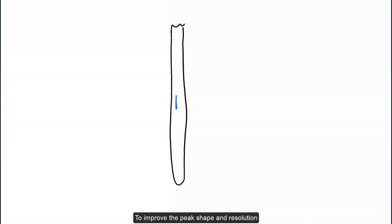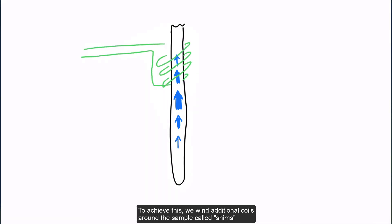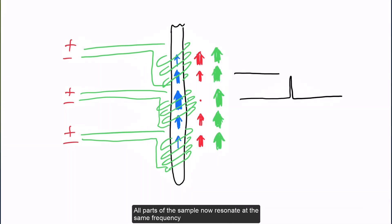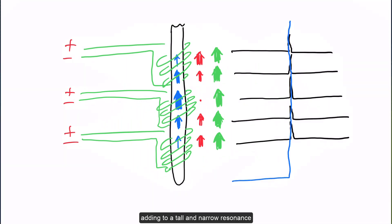To improve the peak shape and resolution, we have to correct the magnetic field in different parts of the tube. To achieve this, we wind additional coils around the sample called shims. We can supply electric current to the shims to compensate for changes in the magnetic field and make the field uniform or homogeneous. All parts of the sample now resonate at the same frequency, adding to a tall and narrow resonance.